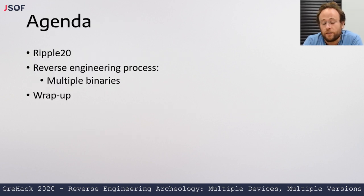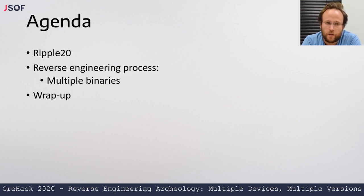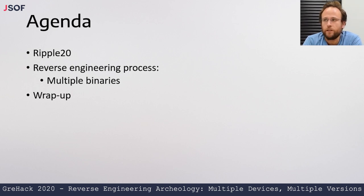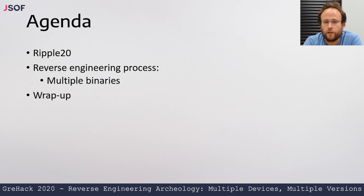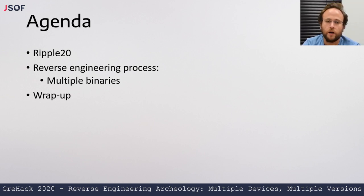What we'll be talking about today is a little bit of background about Ripple 20 for those of you who haven't heard about it, and some pointers on where to find more information. We'll go in-depth into the reverse engineering process of Ripple 20 and talk about some of the different binaries we had to reverse engineer to piece together a complex puzzle. We'll then do a wrap-up with conclusions about what vulnerabilities look like in the supply chain and what reuse of code looks like in the supply chain.